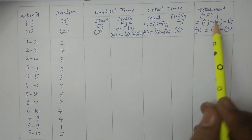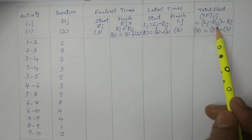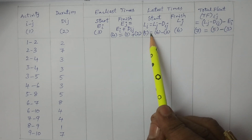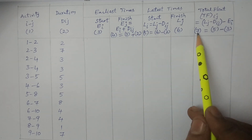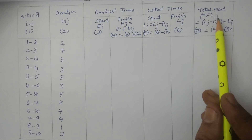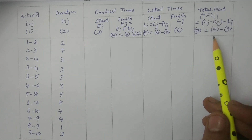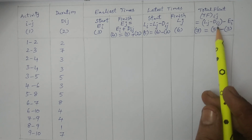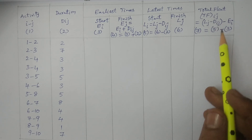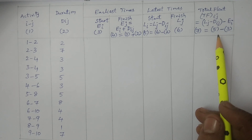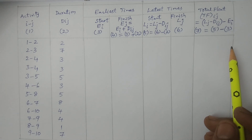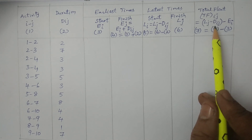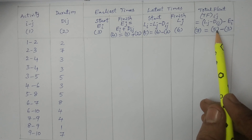Total float T(IJ) equals LJ minus DIJ minus EI — that is, fifth column minus third column, giving the seventh column. Total float is a very critical, crucial part. If the total float is zero, then it forms a critical path. Total float gives the critical path.